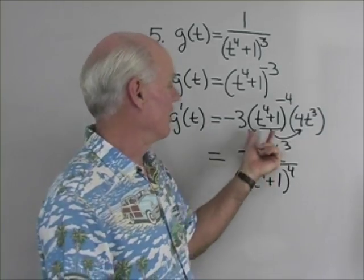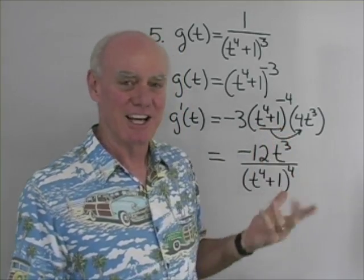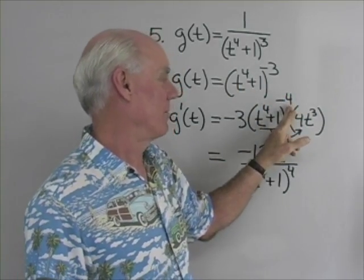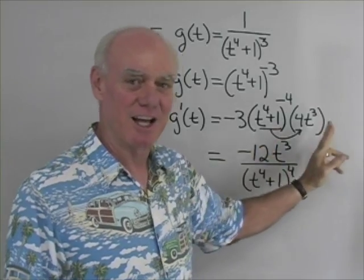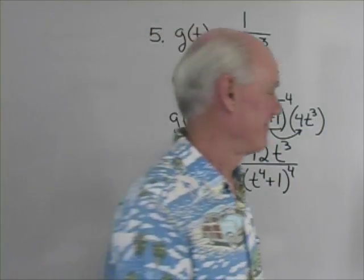Where students make mistakes is they'll differentiate the base too early. The correct steps are: take that exponent out in front, reduce the exponent by 1, don't change the base, then multiply by the derivative of the base. I'm out of time, so the next problem will be on the next video — look for calculus chain rule 2. I'll do another one of these problems and a few more after that. Thank you.